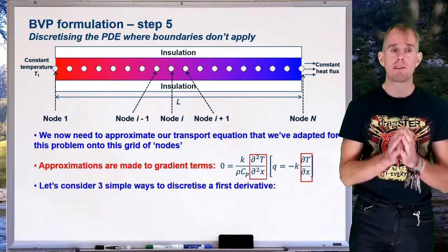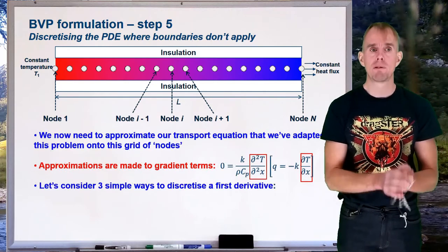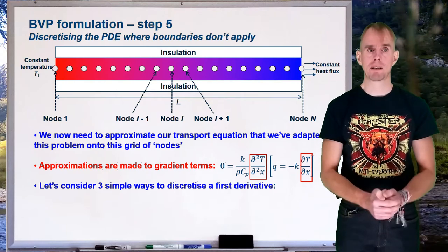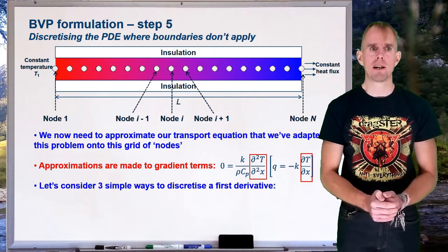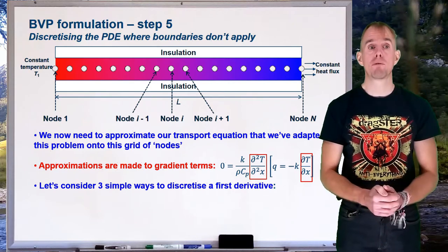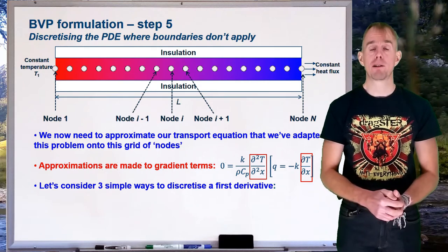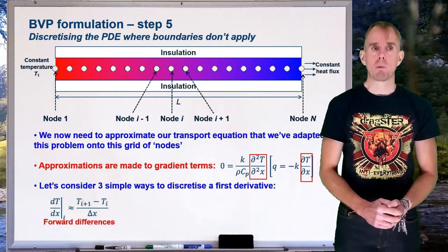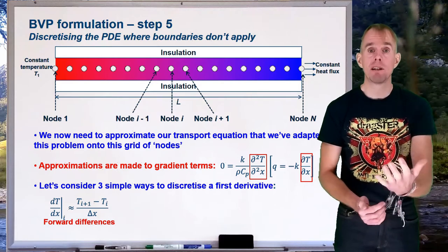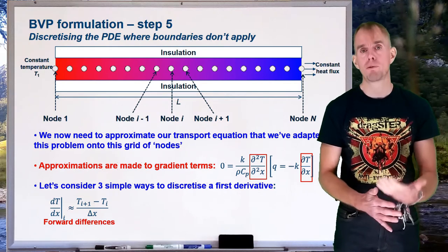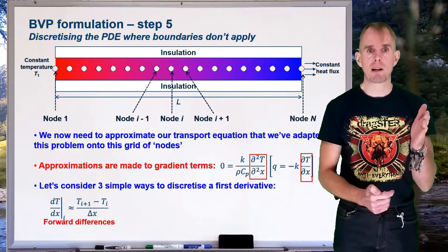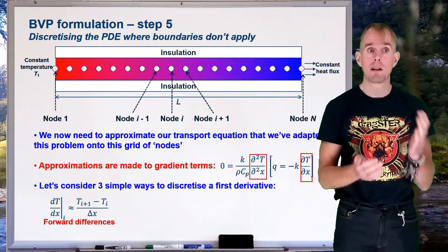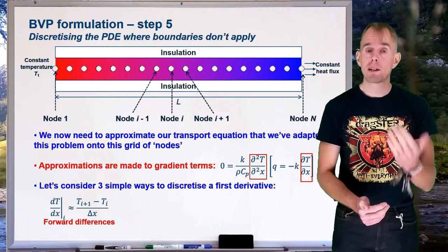Let's think about how we write first-order derivatives as finite difference approximations. There are three simple ways. Imagine standing at node i, looking towards the cold end, and seeing nearest neighbour i+1. One approximation of the gradient at node i is a forward difference: dT/dx at node i ≈ (T_{i+1} − T_i) / Δx, where Δx is the distance between nodes i and i+1.